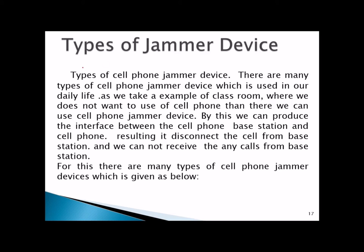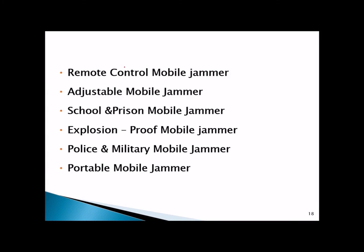There are many types of cell phone jammer devices used in daily life. For example, in a classroom where we do not want students to use cell phones, a jammer produces interference between the cell phone and the base station, disconnecting the cell from the base station so no calls can be received. The specific types include: remote control mobile jammer, adjustable mobile jammer, school and prison mobile jammer, exclusion proof mobile jammer, police and military mobile jammer, and portable mobile jammer.